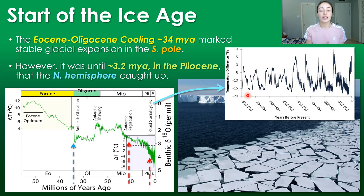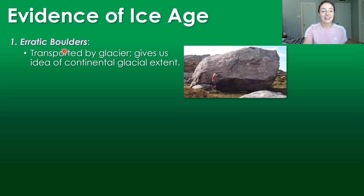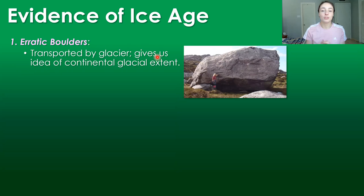But before we get to that, let's talk about the evidence we have for the ice age. The first and most obvious one is glacial transported sediment, like erratic boulders — that is actually what they're called. These boulders give us an idea of where glaciers have moved over continents, because those boulders couldn't have been moved in any other way — as long as they're far away from a mountain alluvial source